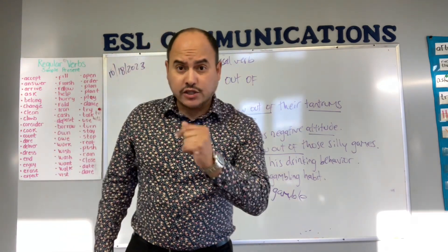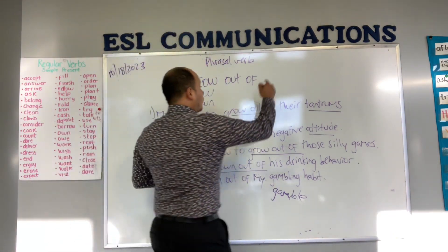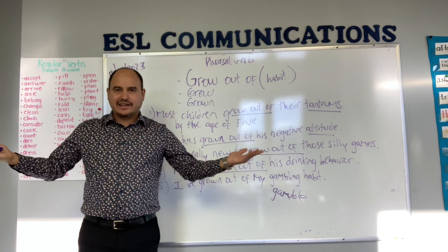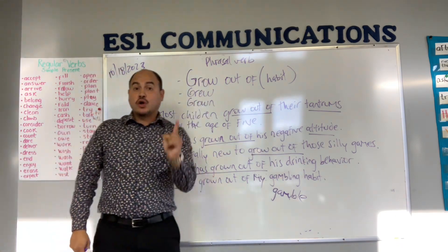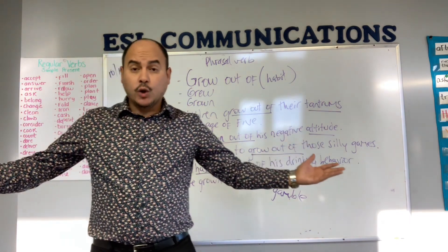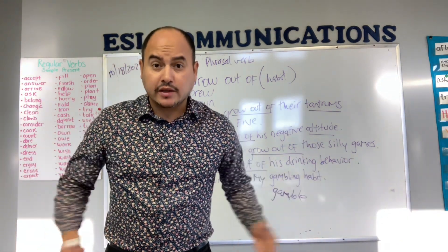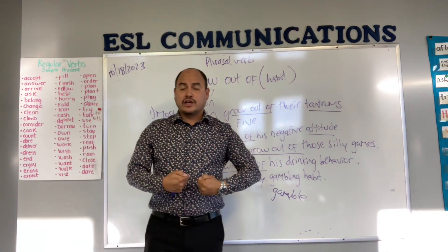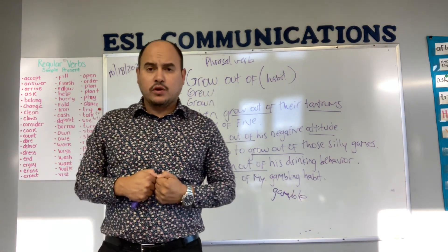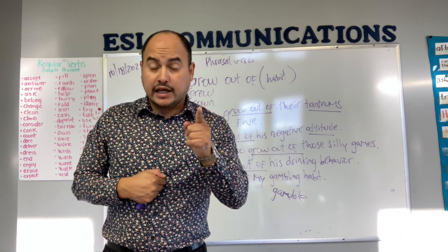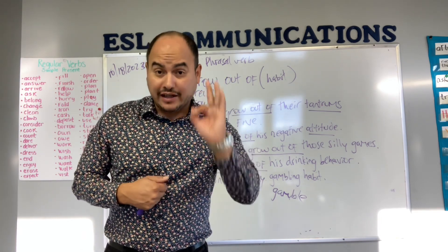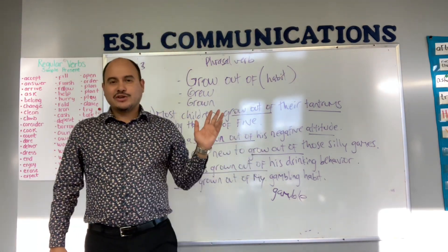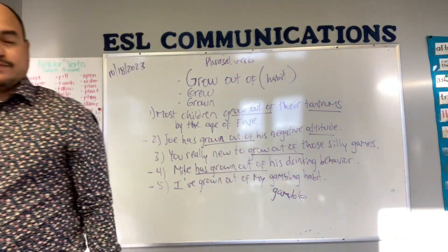There you have it — phrasal verb: grow out of something. Como salir de ese hábito, ya crecer, dejarlo. I hope this video helps you. Espero que te ayude este video. Please leave your comments — grow out of something — shoot me an example, envíame un ejemplo. Espero te sirva. Dale like, comparte con las personas que necesitan aprender más inglés, tus amigos, tu familia. I'll see you next time. Enjoy.